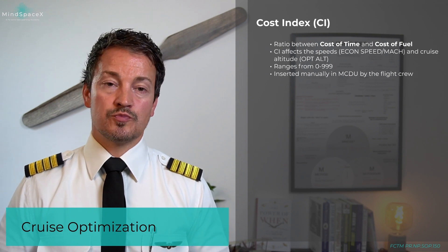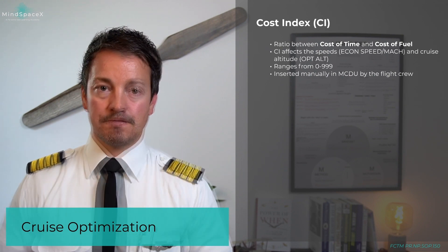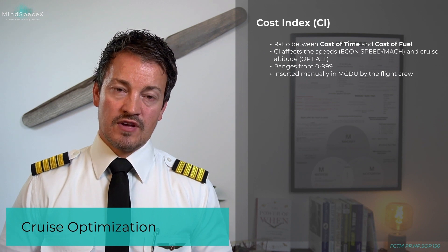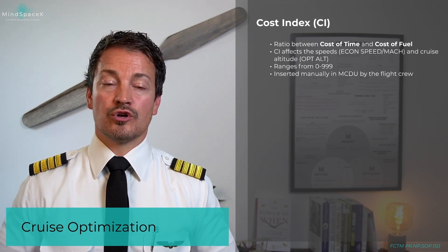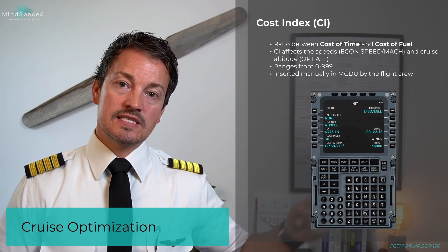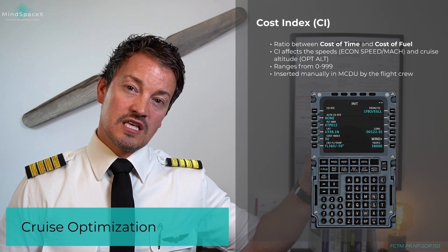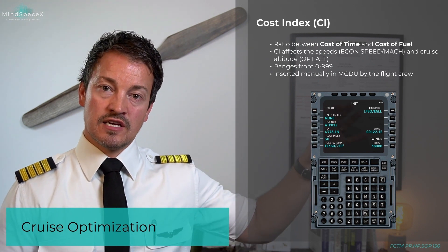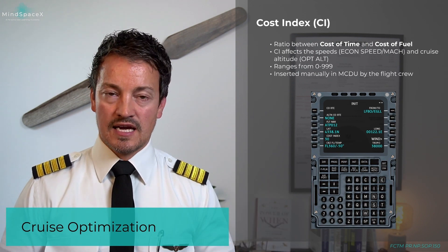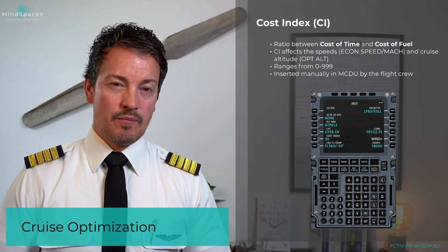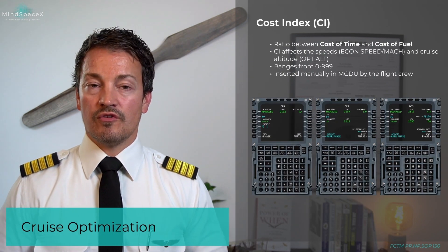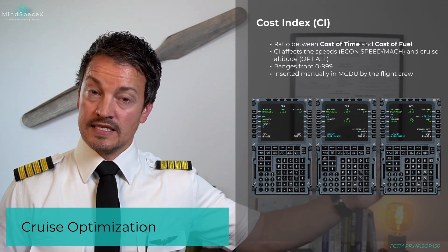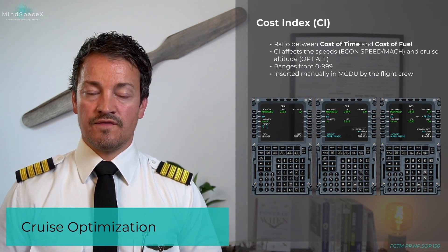The range for cost index goes between zero and 999. It is inserted manually into the MCDU, done through the pre-flight phase on the init page, and can be verified and altered through the different phases. Here we can see the entry point on the fifth key on the init page. Here I've inserted a cost index of 30. If I insert a cost index on the init page, it will use that cost index throughout the entire flight, applying it to all the different phases. But if I want to be specific about individual phases and their cost index, I can go into the performance pages for climb, cruise, and descent, and alter the cost index individually there.